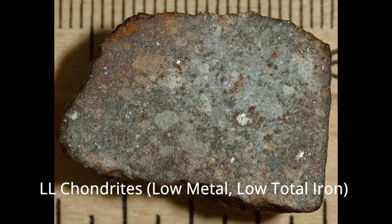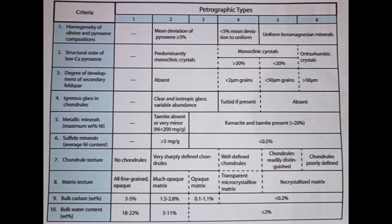Lastly, there are LL chondrites, where LL stands for low metal, low total iron. These meteorites have a much lower metal content ranging from 1 to 3% of the meteorite's weight, and a total combined iron content of 19 to 22%, making them distinct from both H and L chondrites. In 1967, two experts in meteoritics, W. Randall Van Schmoos and John A. Wood, introduced a comprehensive classification system for chondrites that is still used today.